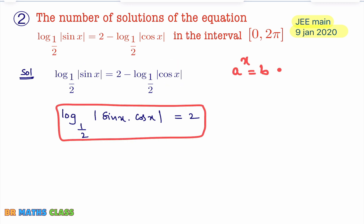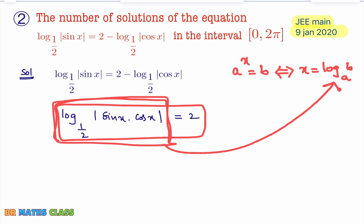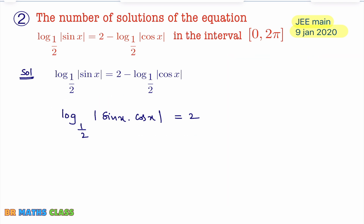Whenever something is like a^x = b, we can write x = log b base a. This is the basic definition of logarithm. Here you observe this part: log b base a = x. If you want to write it in exponential form, then a^x = b. I want to remove this logarithm using its definition.